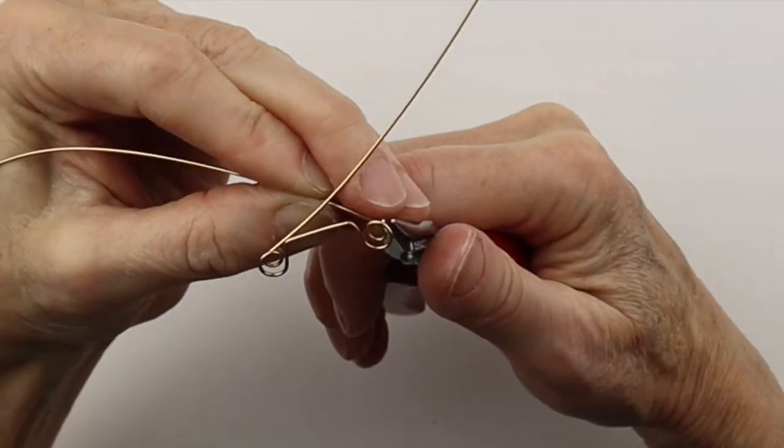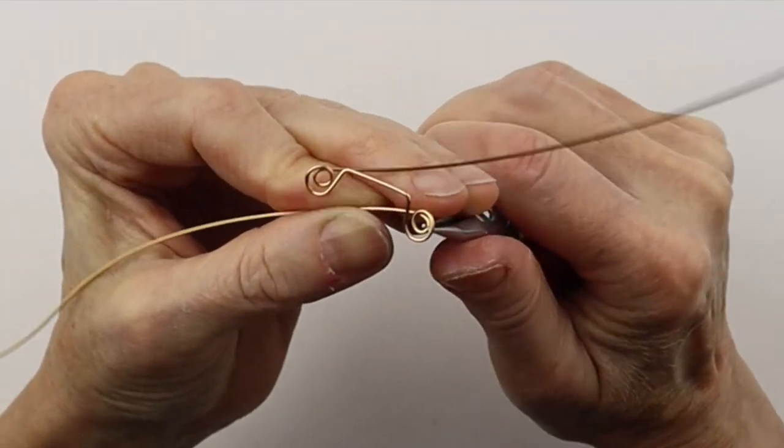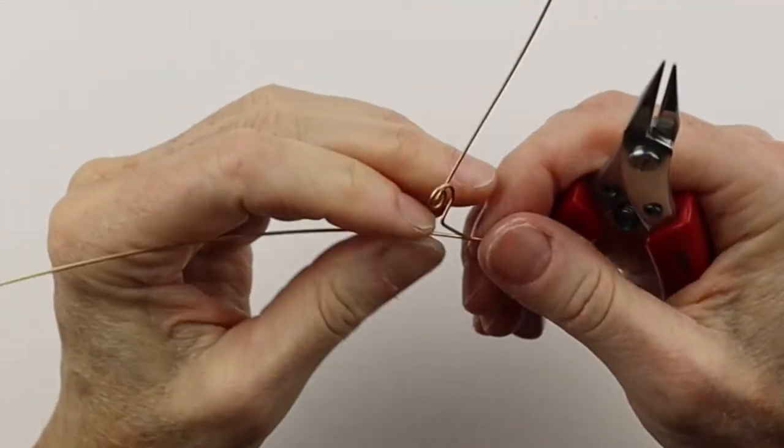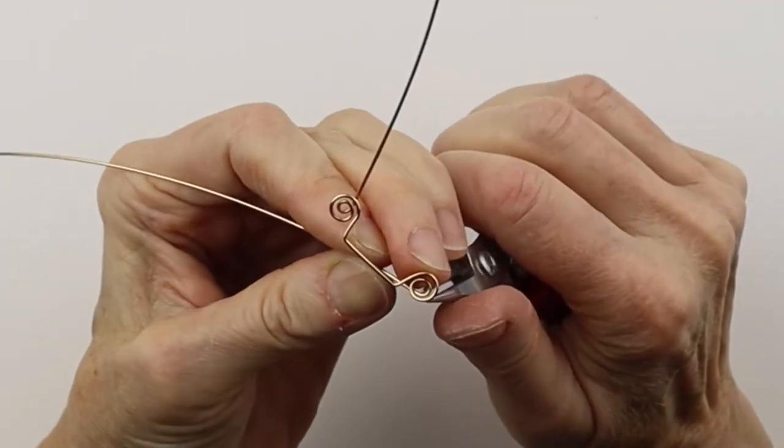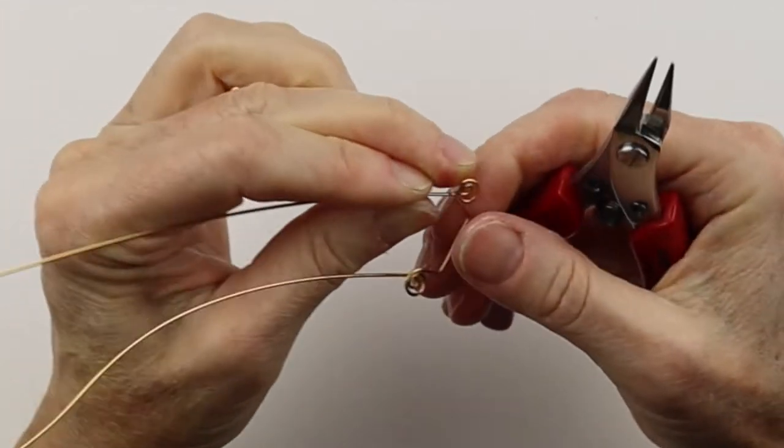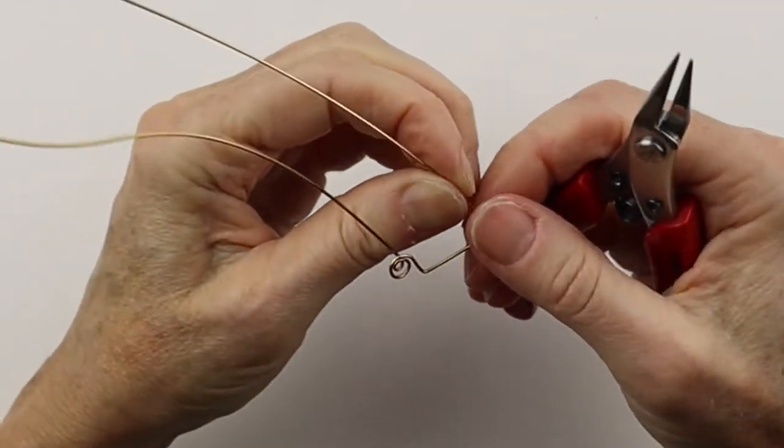Then you can get your smallest pliers and bring it around, and this one too. Just bring it around. So that can be the little fancy feet.